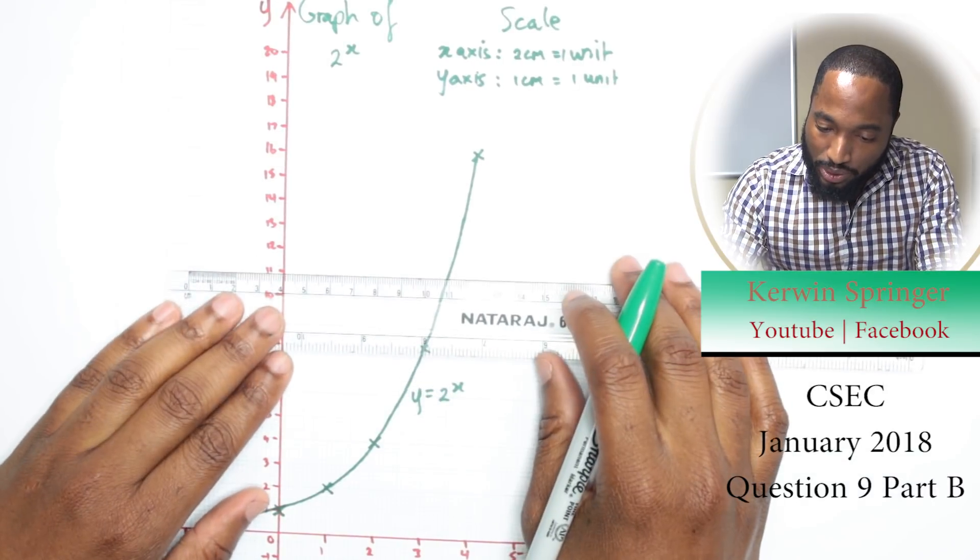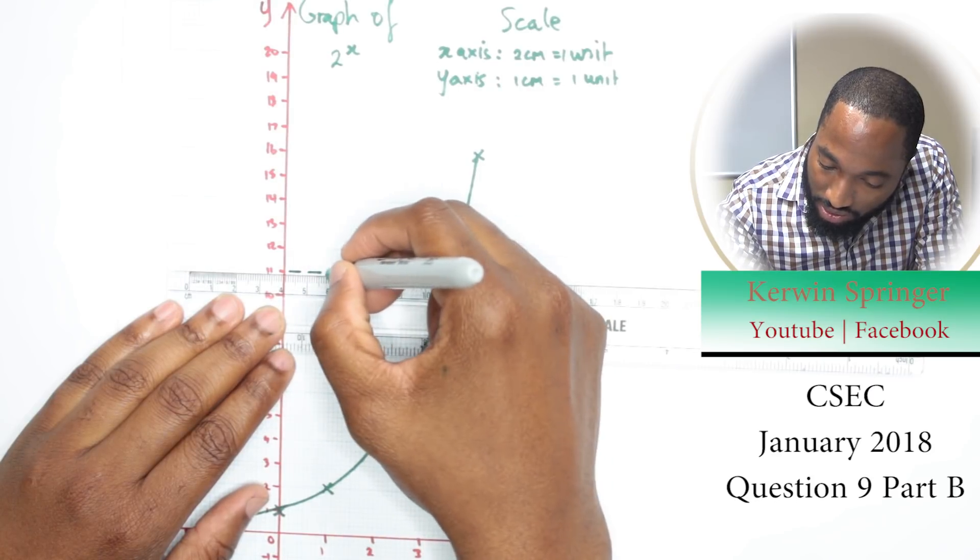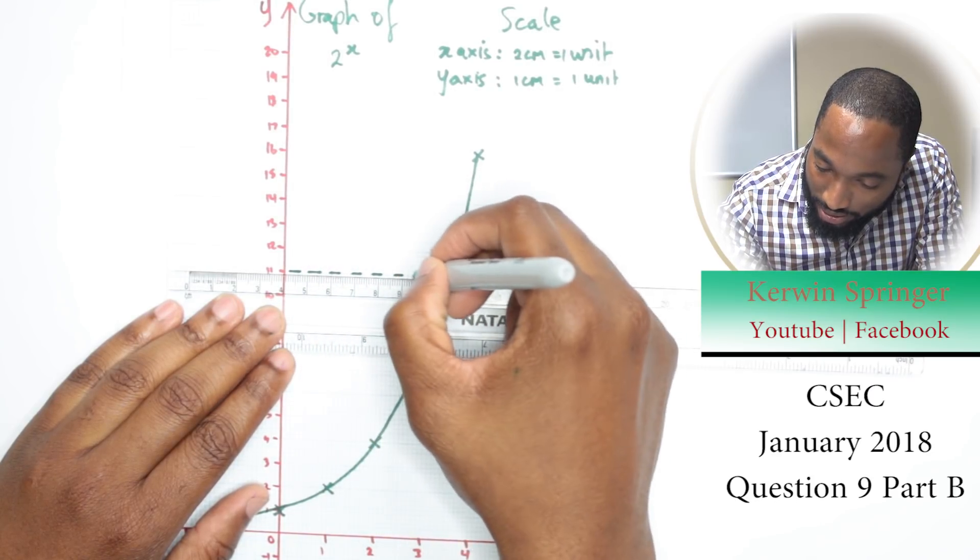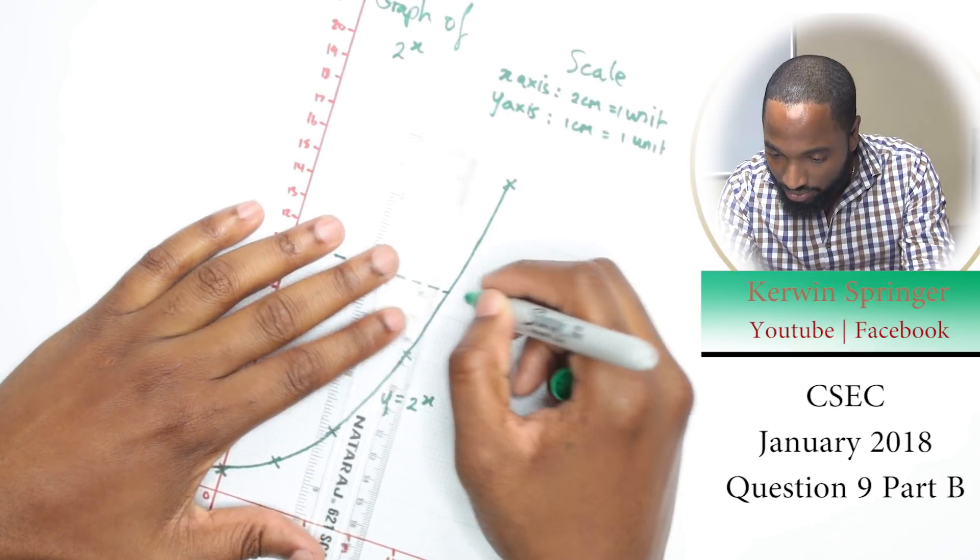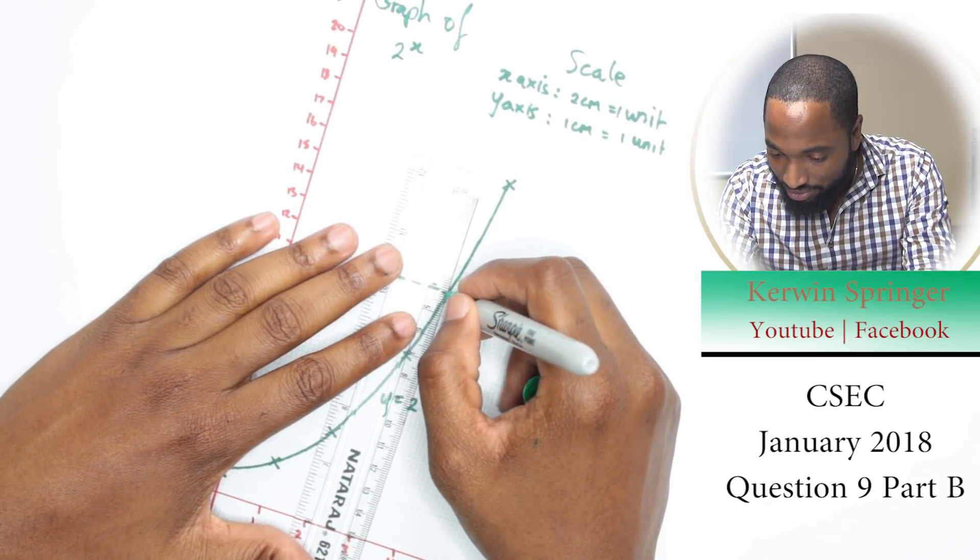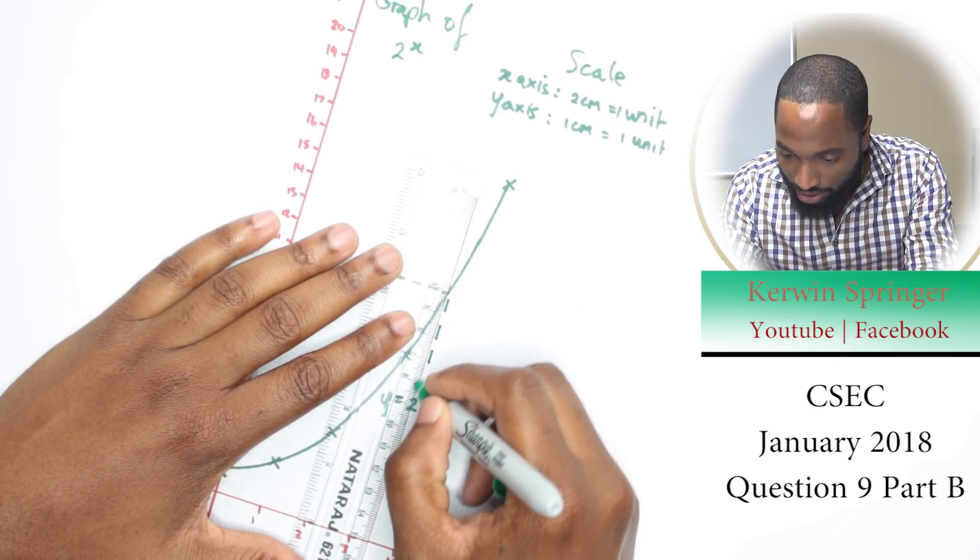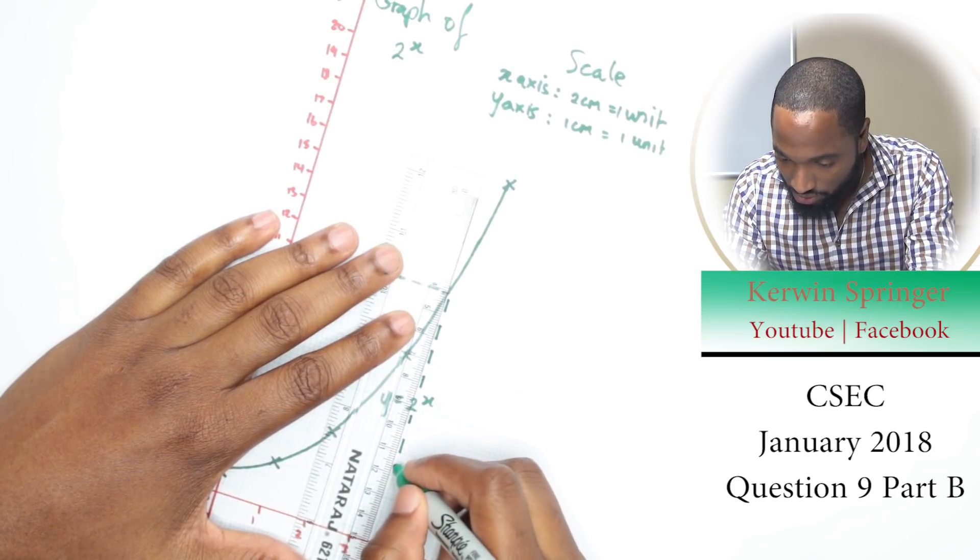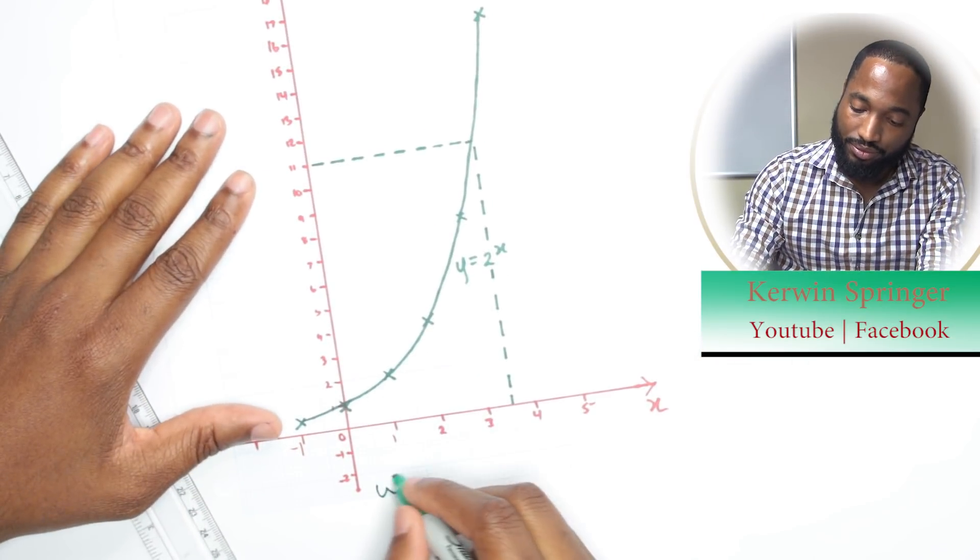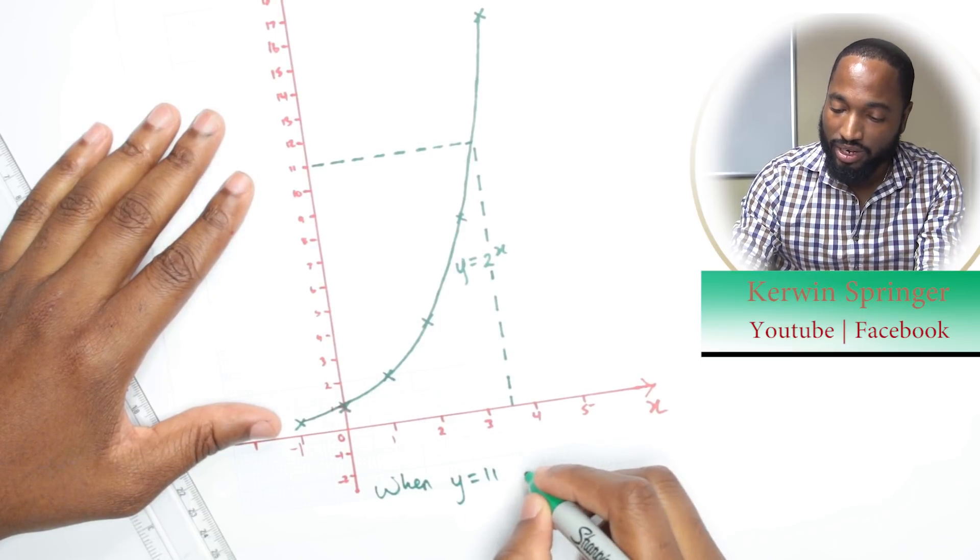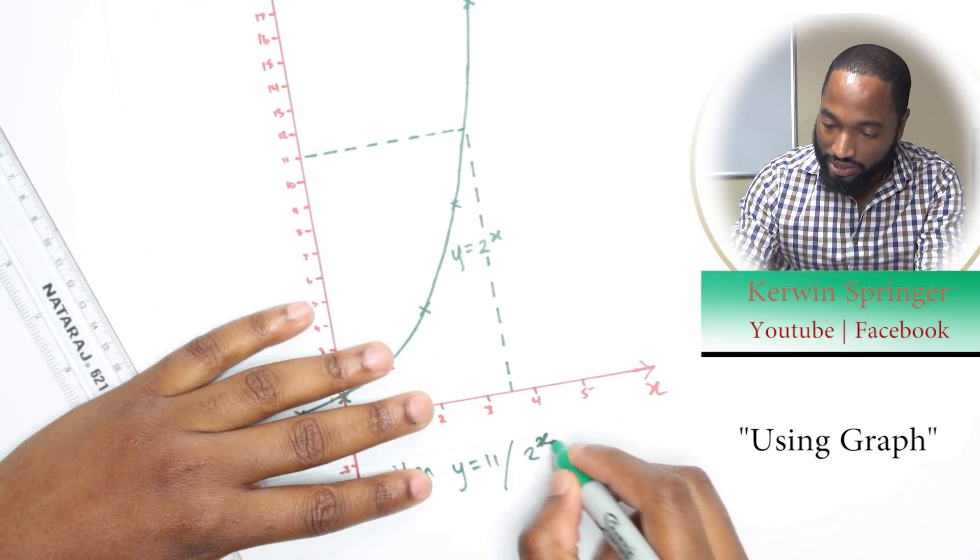So you just come, you take your ruler—and you should walk into your exam with a nice long clear ruler, not some old wooden ruler where you can't draw a straight line. And things, students do these things, I don't know why. So draw dotted lines because this is not part of your graph. That's 11 coming down there. It hits the line somewhere there, and then you need to come down. So when y is 11, when 2 to the power of x is equal to 11...